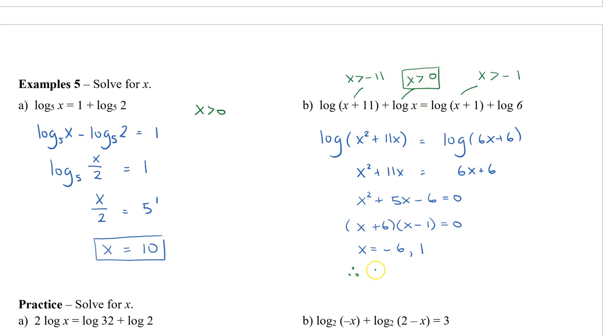Taking a look at my two solutions, negative 6 does not satisfy this restriction. Therefore, x equals negative 6 is extraneous. And my only solution is x equals 1.